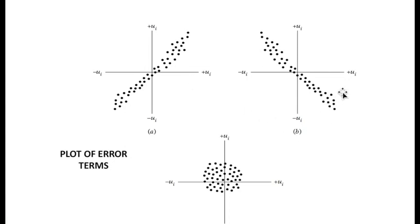In graph B, we also see that whereas one error term increases, the other error term decreases. This is a clear negative correlation and is also undesirable in linear regression equations.